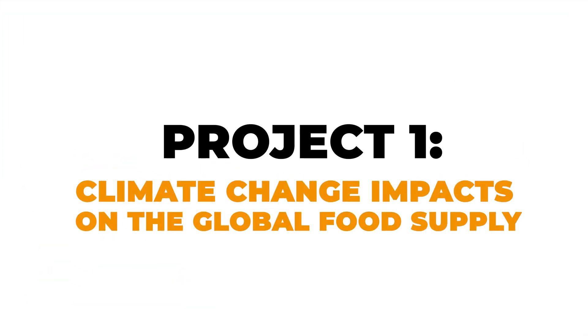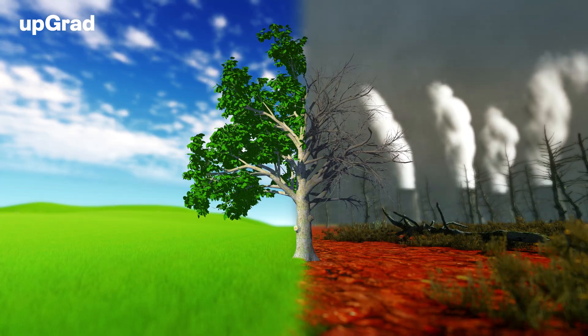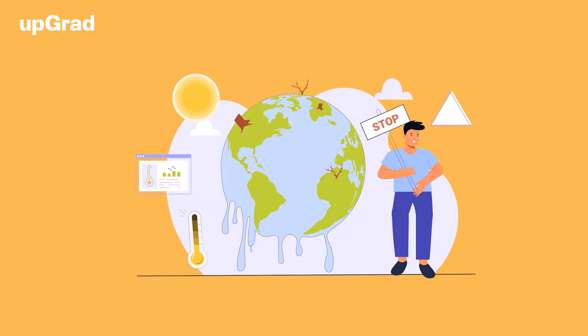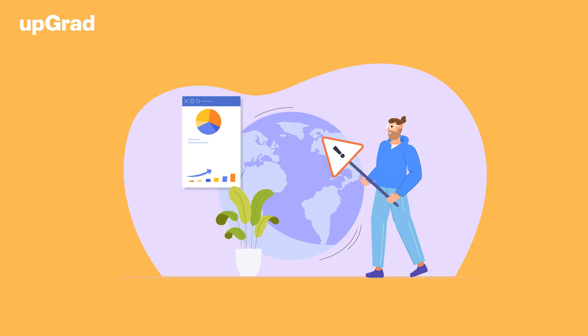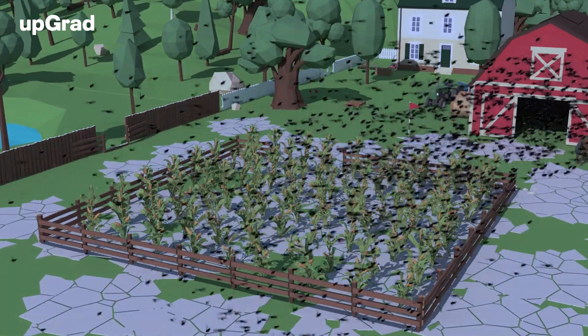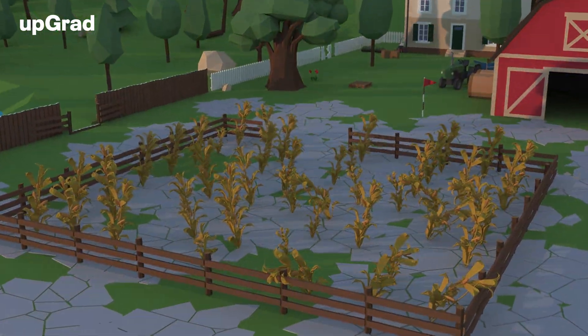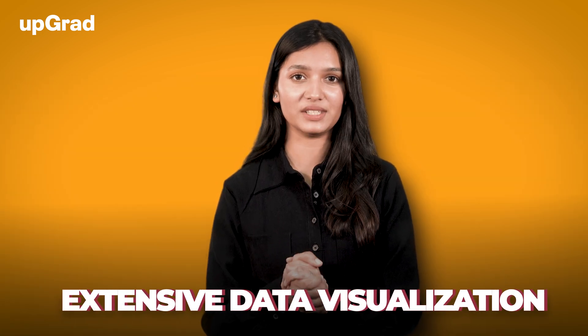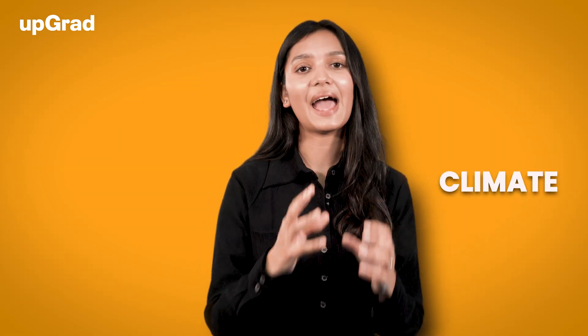Project 1: Climate Change Impact on Global Food Supply. Climate change is a major environmental challenge affecting human lives and food production. This project focuses on analyzing the impact of climate change on global food supply. The main goal is to calculate the potential impact on staple crop production due to changes in temperature and precipitation. You will also analyze how carbon dioxide levels affect plant growth and the uncertainties in climatic conditions. This project involves extensive data visualization to compare food production in various regions over different time periods.